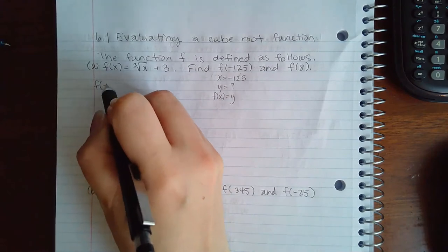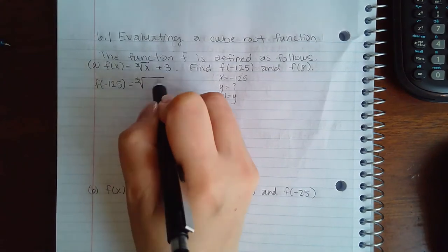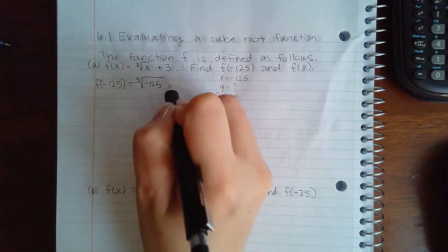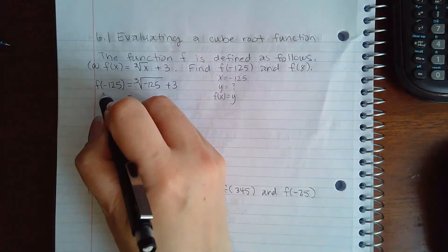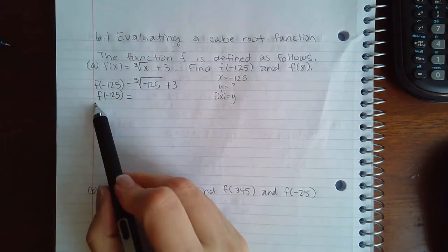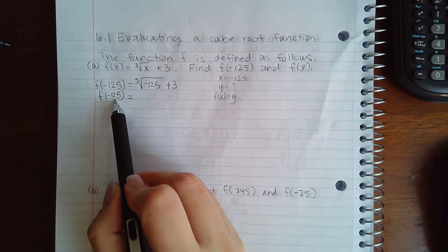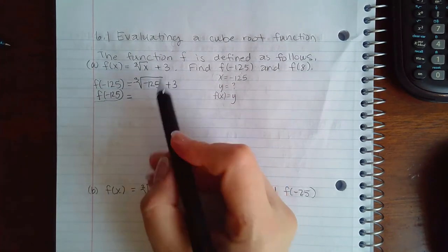We plug in -125 everywhere we see x. This is just a label for the y value - this is just saying what is the y value when x is -125.